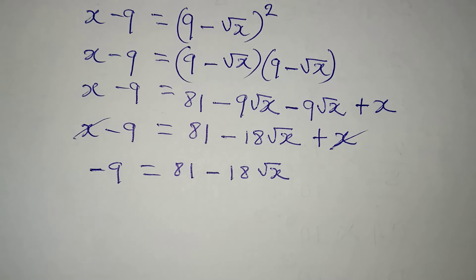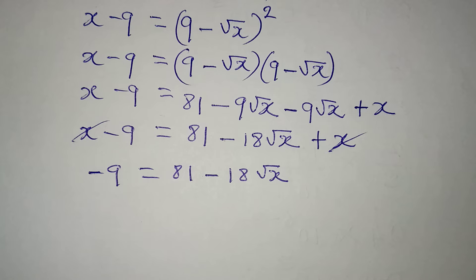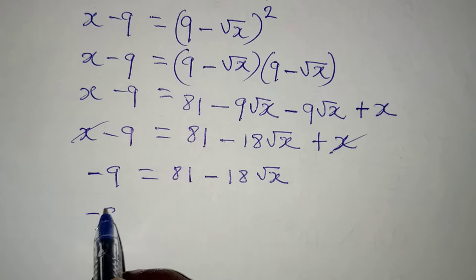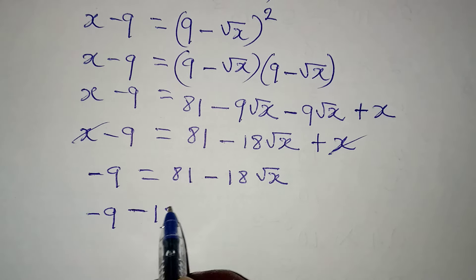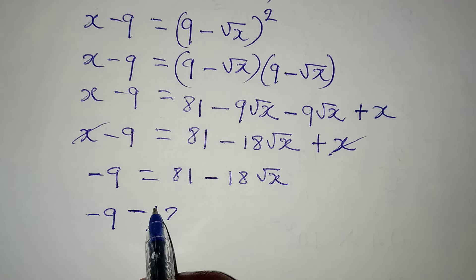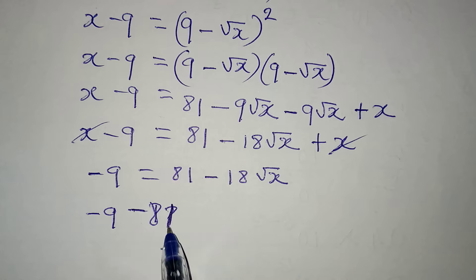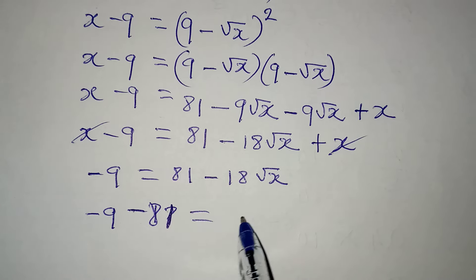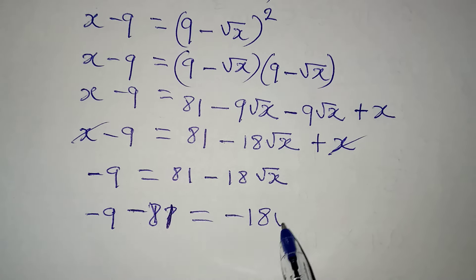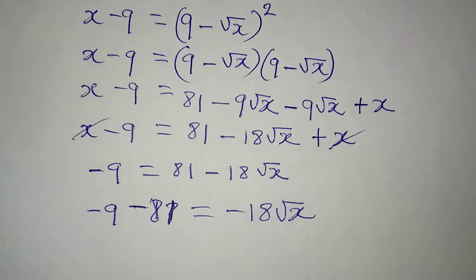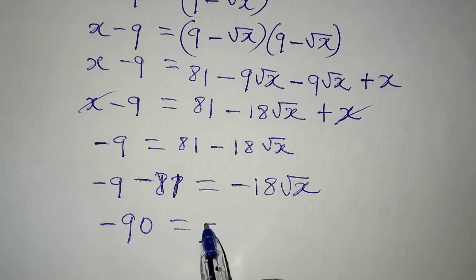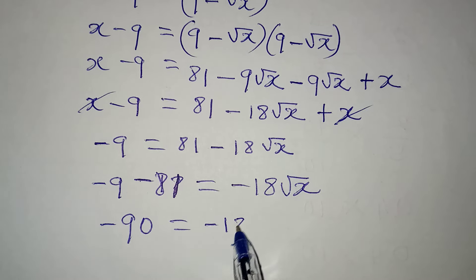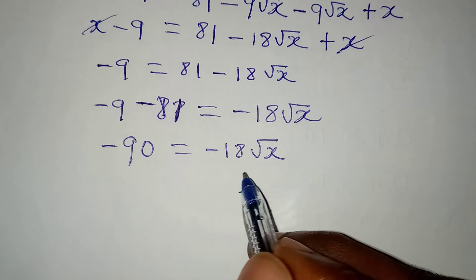Collecting like terms: minus 9 minus 81 equals minus 18 root x, which gives minus 90 equal to minus 18 root x.